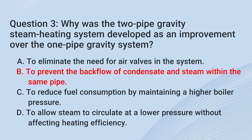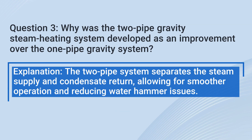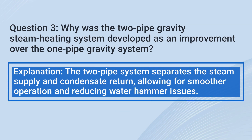The correct answer is B. To prevent the backflow of condensate and steam within the same pipe. The two-pipe system separates the steam supply and condensate return, allowing for smoother operation and reducing water hammer issues.